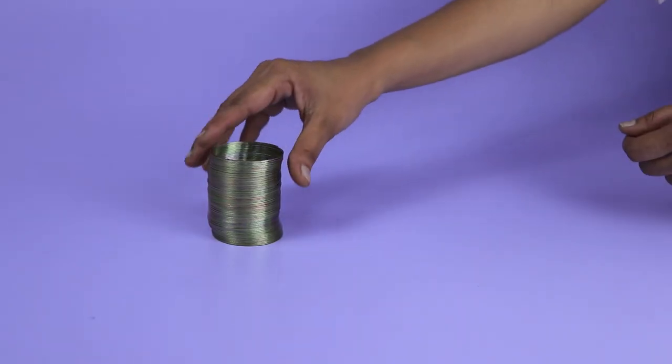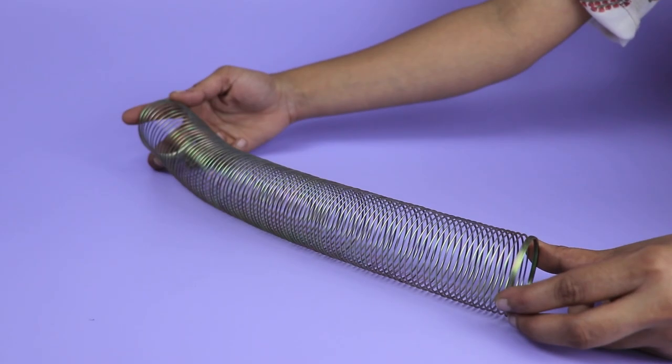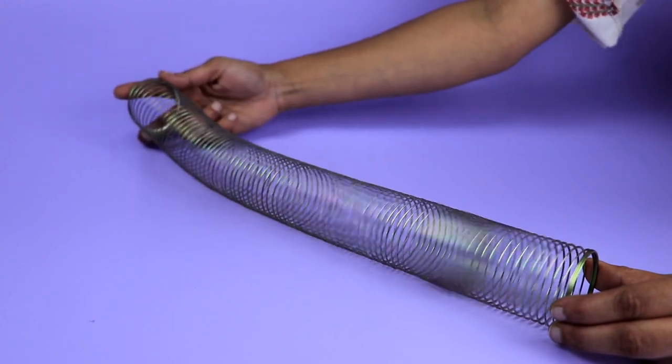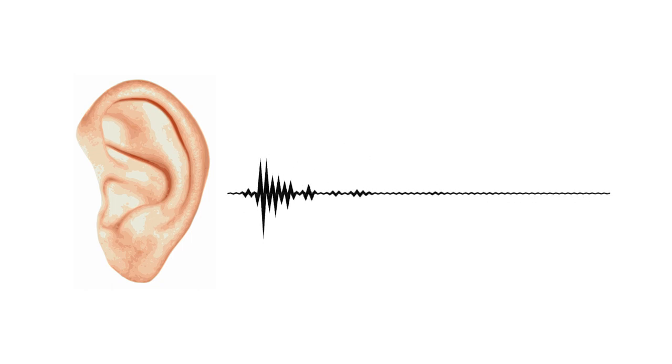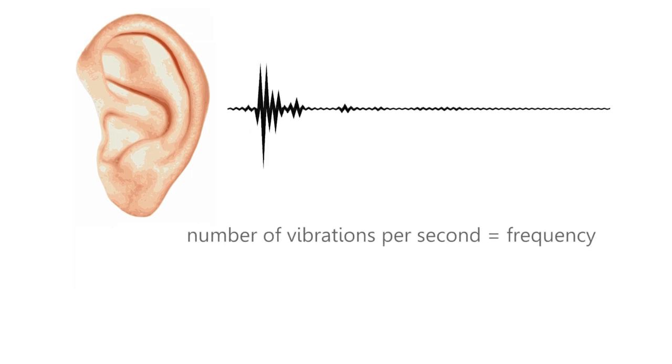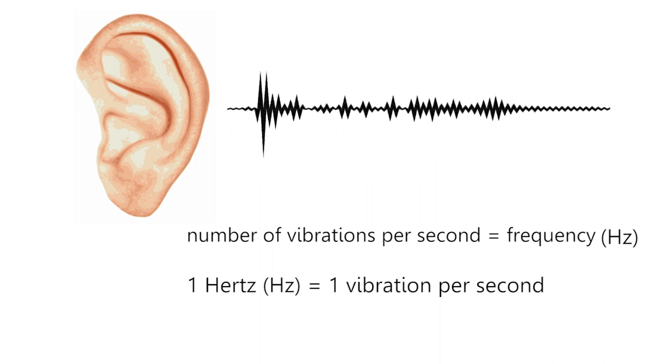You can introduce the topic by using a slinky to demonstrate a model of a sound wave, which will also help students revise the compression and rarefaction that occurs in longitudinal sound waves. Just push the slinky from one end and explain how sound waves are produced. You can then explain that when we hear something, we are sensing the vibrations in the air. The number of vibrations per second is known as frequency, measured in hertz — one hertz equals one vibration per second.